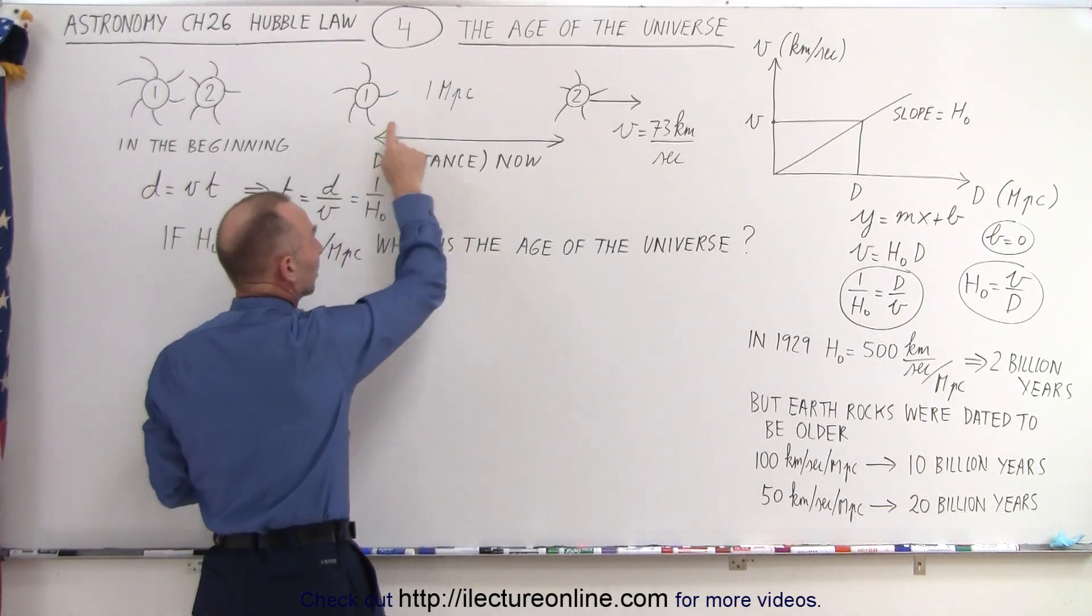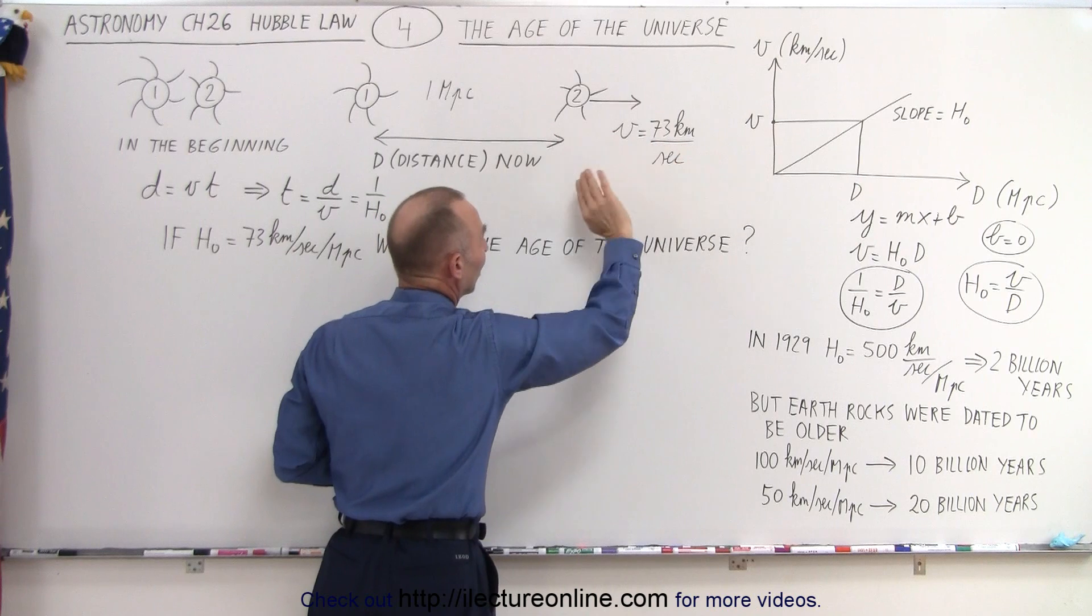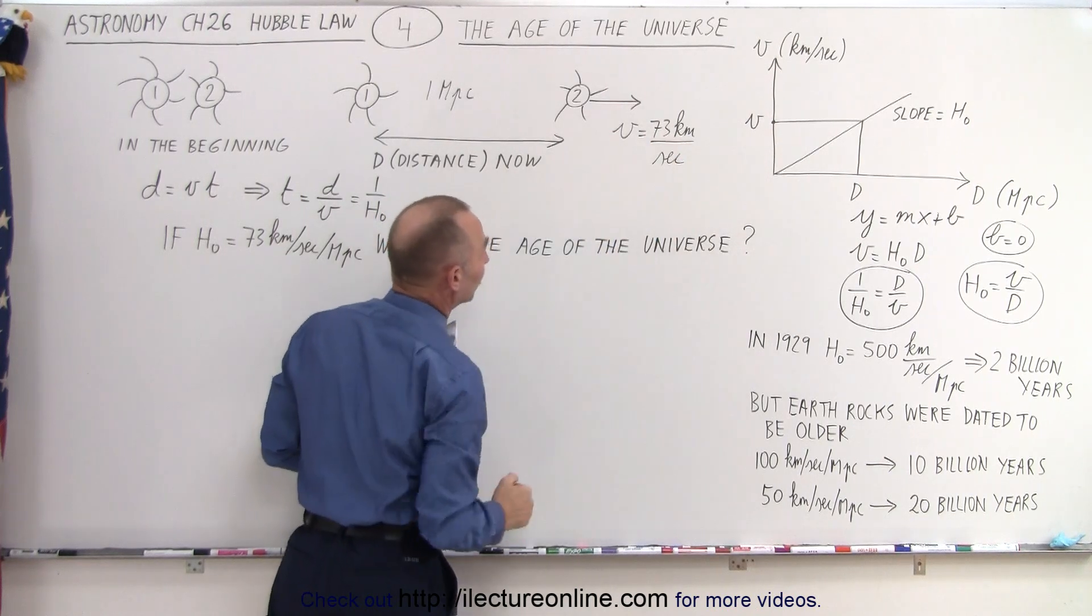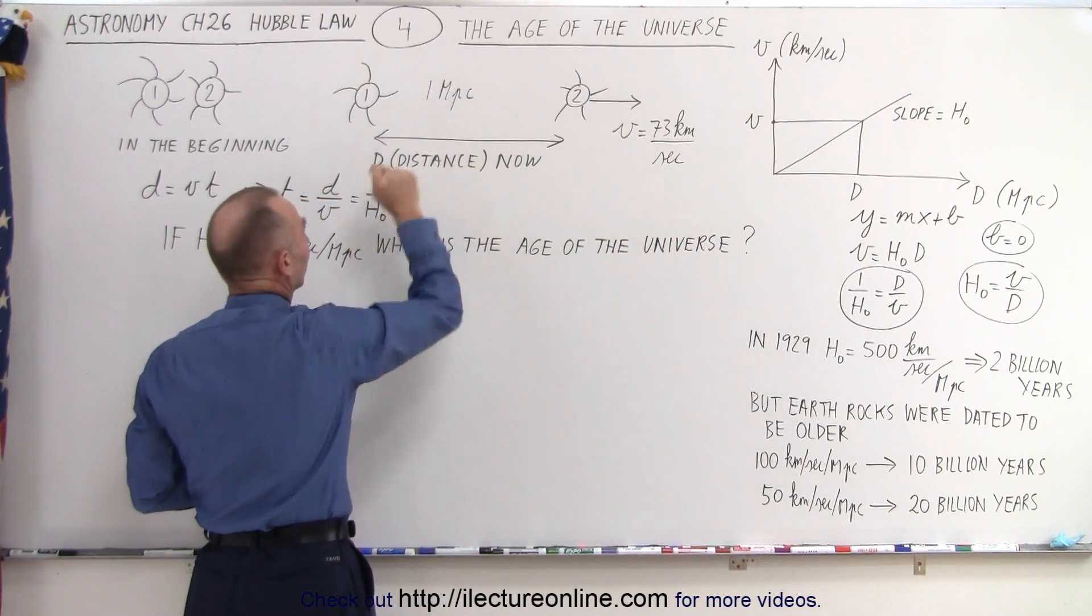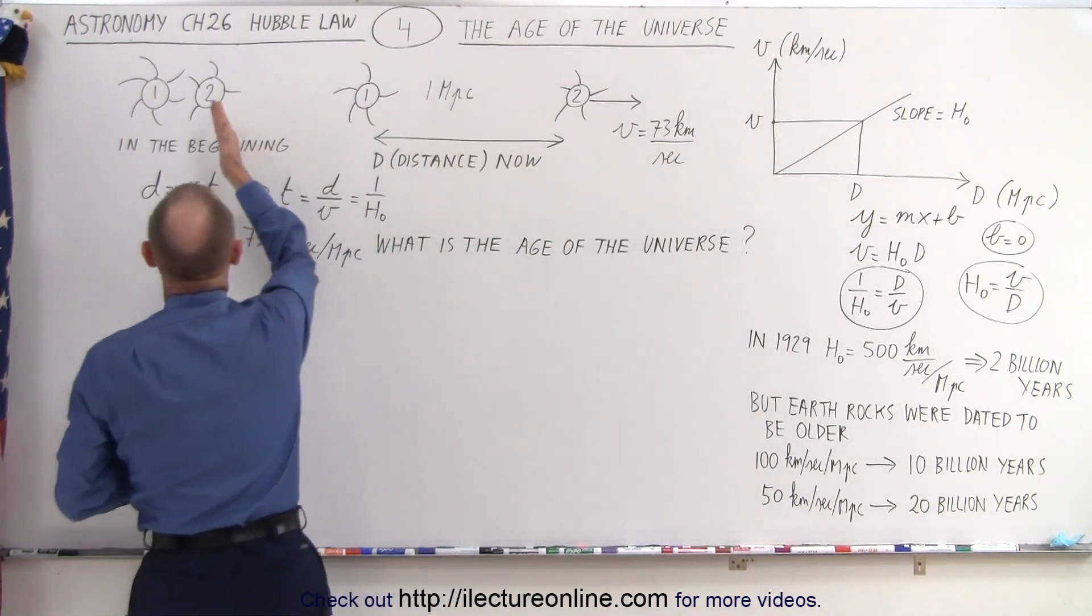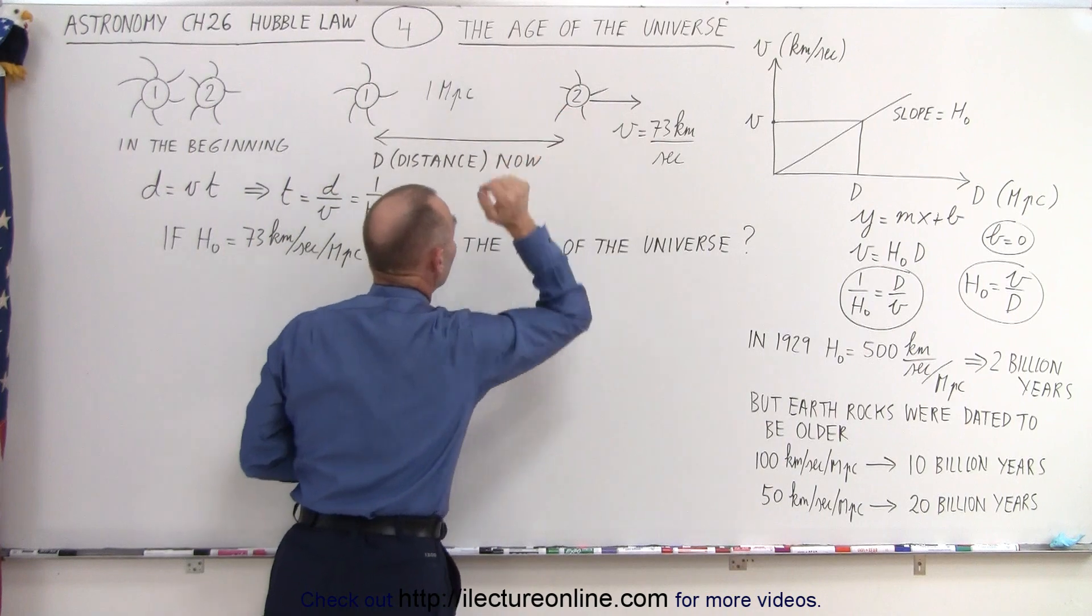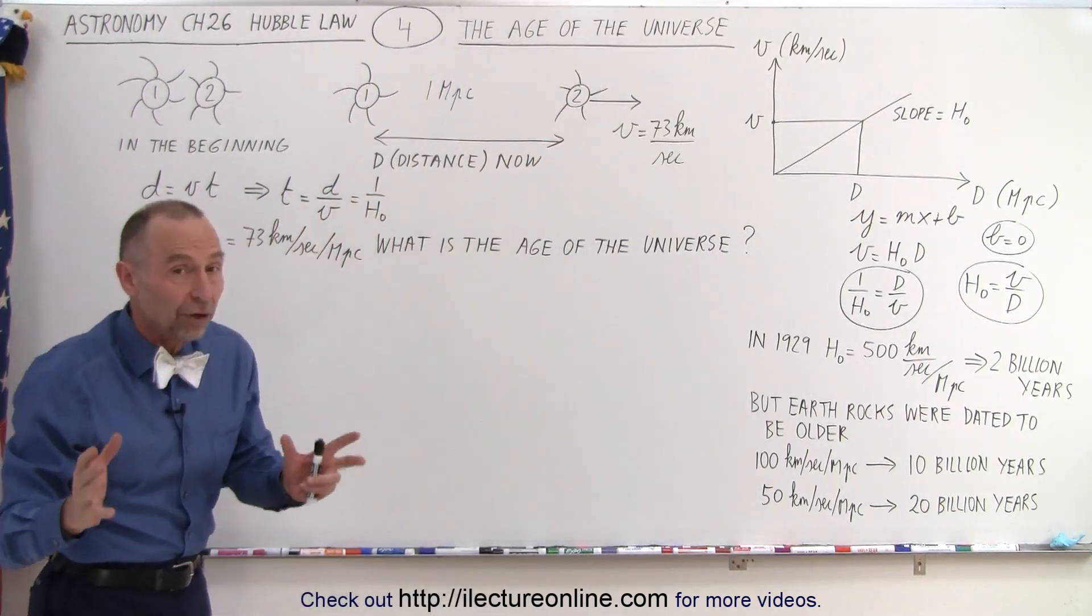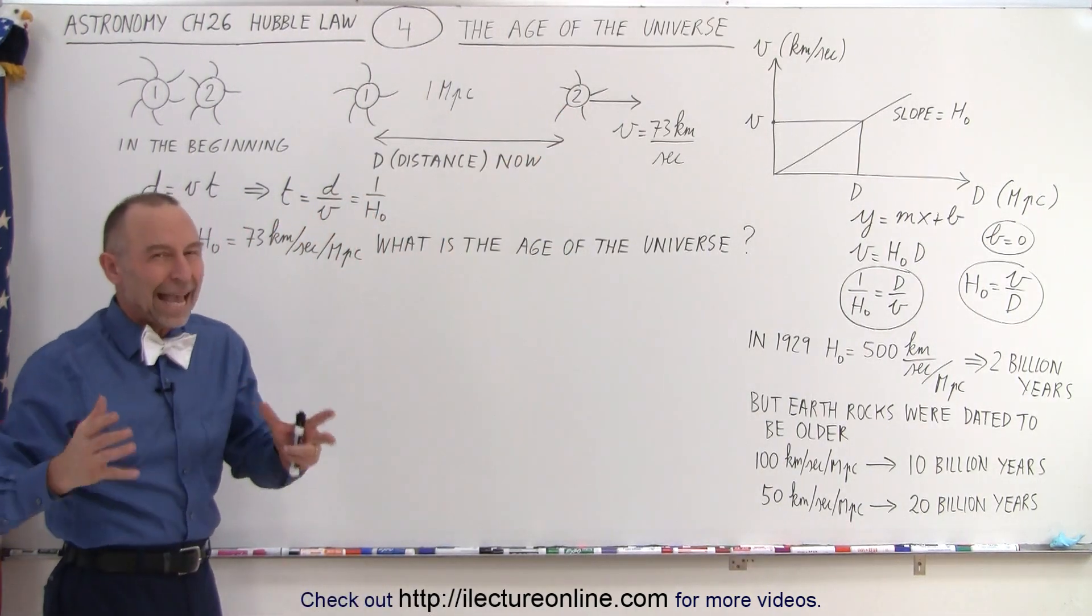From our perspective, this galaxy would be moving away from us, let's say at 73 km per second, if it was one megaparsec away. Then we can figure out how long it took for this galaxy to go from this position to this position. And however long that took, that should be about the age of the universe.